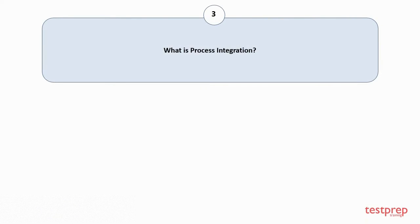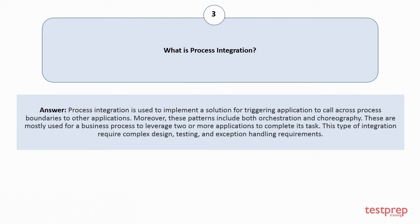Question number 3: What is process integration? Process integration is used to implement a solution for triggering application to call across process boundaries to other applications. Moreover, these patterns include both orchestration and choreography. These are mostly used for a business process to leverage two or more applications to complete its task. This type of integration requires complex design, testing, and exception handling requirements.